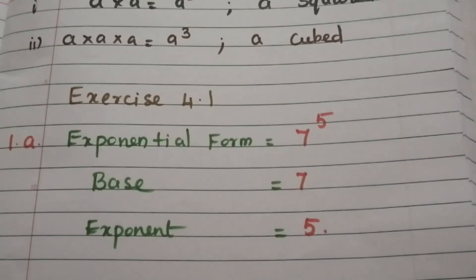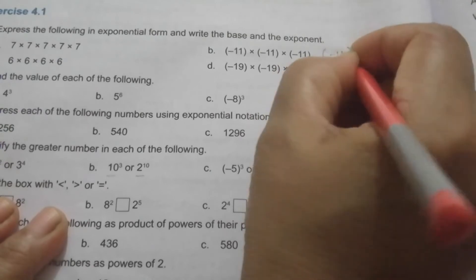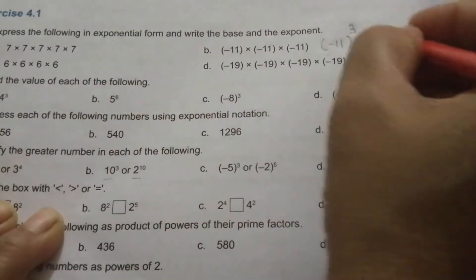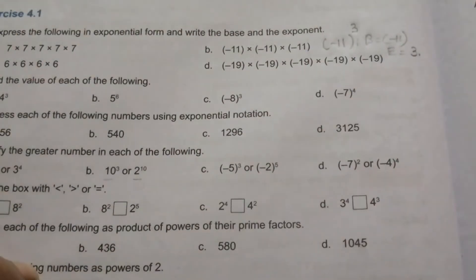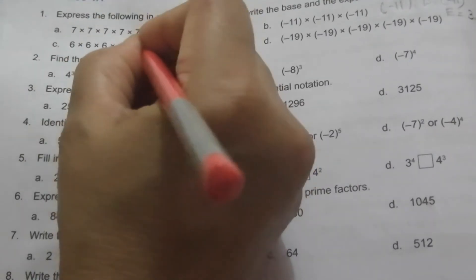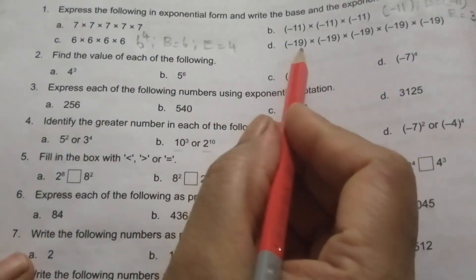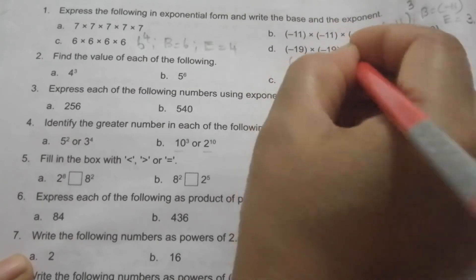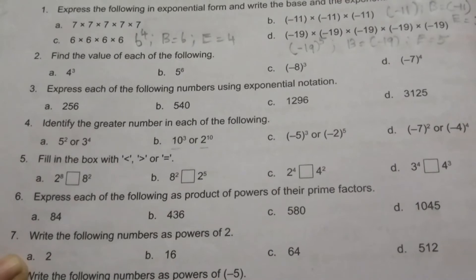Write your answers in full form. (c) 6 into 6 into 6 into 6 — exponential form is 6 power 4; base is 6, exponent is 4. (d) Minus 19 repeated 5 times — exponential form is minus 19 power 5; base is minus 19, exponent is 5.